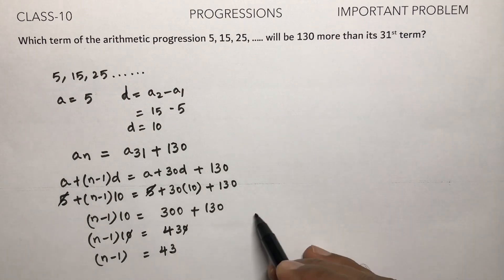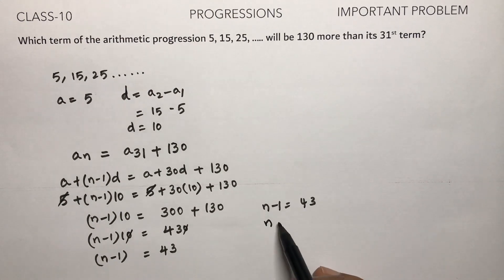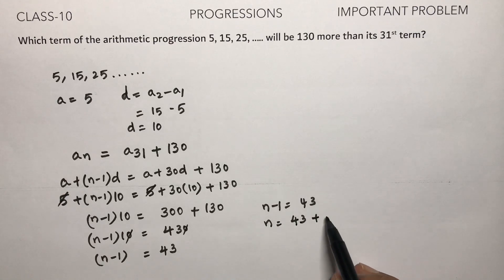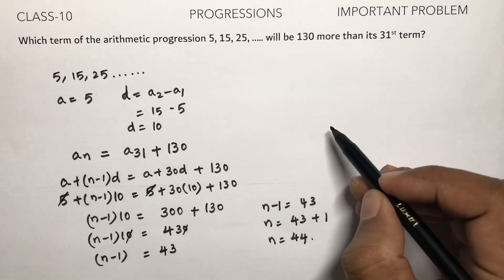So n minus 1 is 43. Therefore n equals 43 plus 1, n equals 44. So the 44th term.